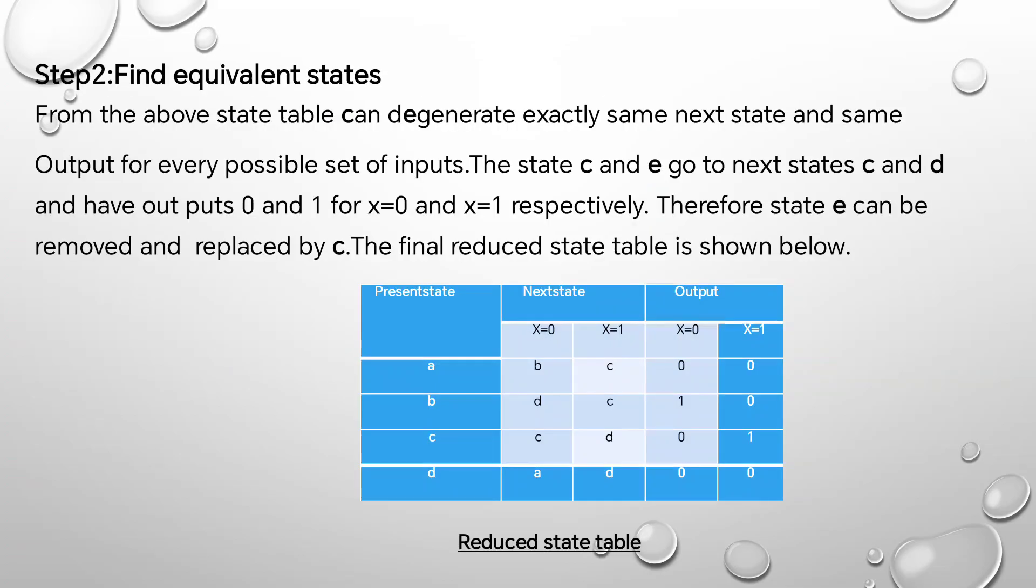Step 2: Find equivalent states. From the above state table, we can determine which states generate exactly the same next state and same output for every possible set of inputs. States C and E go to next states C and D and have outputs 0 and 1 for x=0 and x=1 respectively. Therefore, state E can be removed and replaced by C.